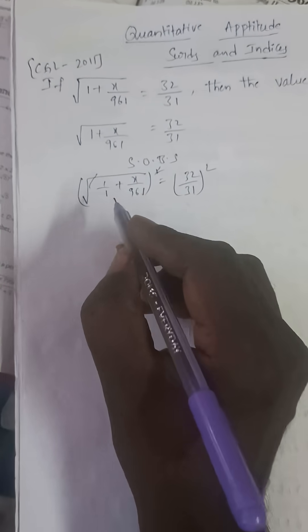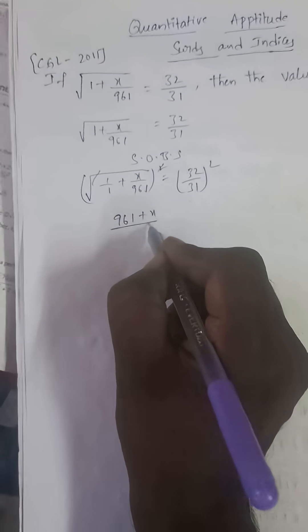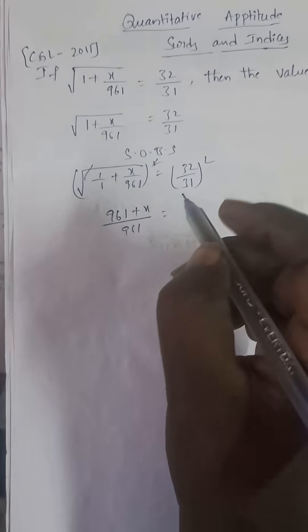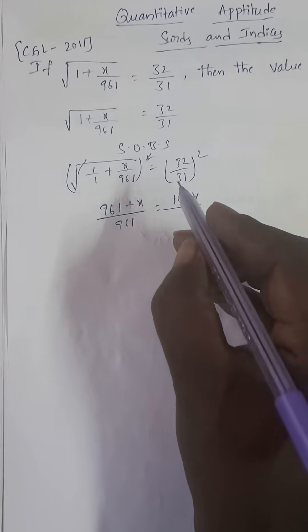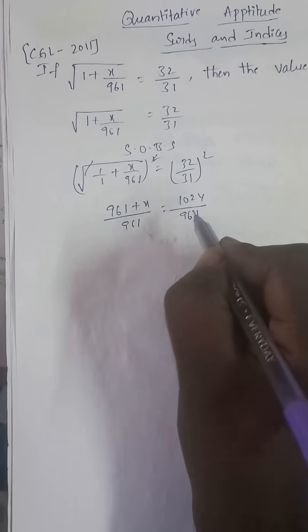Here are fractions, so cross multiply. 961 plus x by 961 is equal to 32 square which is 1024. 31 square is 961.